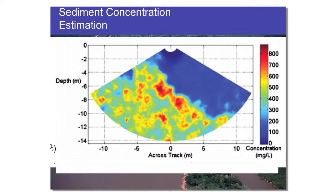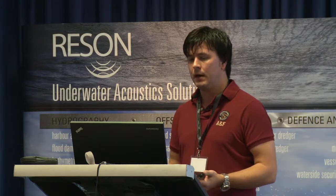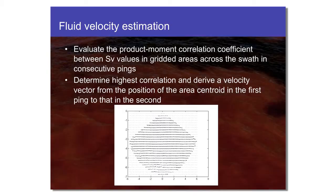What we've also been able to do alongside developing methods for quantifying suspended sediment concentration is look at a way of calculating fluid velocity across the 2D swath. We developed a method using the product moment correlation coefficient to determine how well two swath windows are correlated in terms of their scattering volume strength values across the swath.